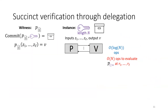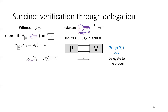Our goal is to delegate this computation to the prover so the verifier doesn't have to do all the work. Instead of the verifier doing this work at the end, we ask the prover to evaluate the polynomial and send the result. But since we want to make sure the prover doesn't cheat, we need a way to check that the evaluation was done correctly.